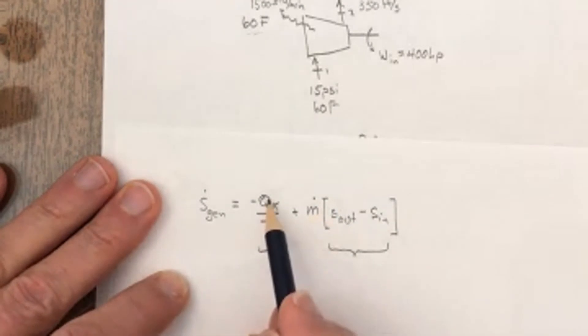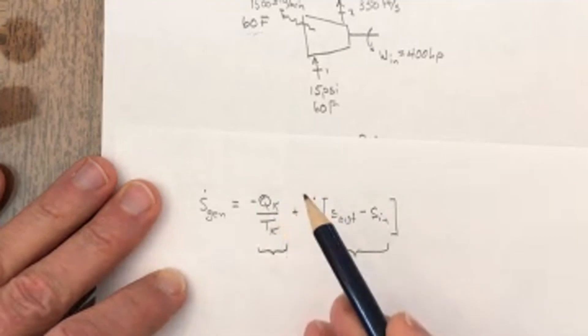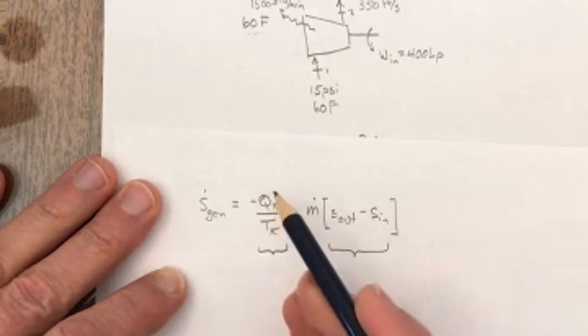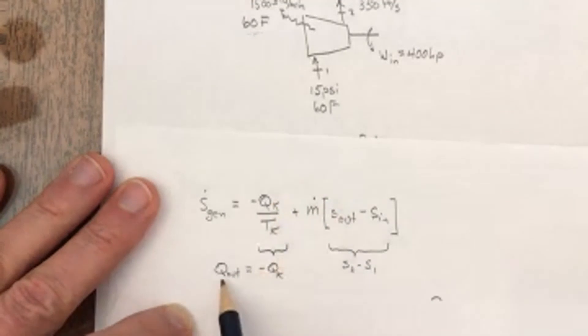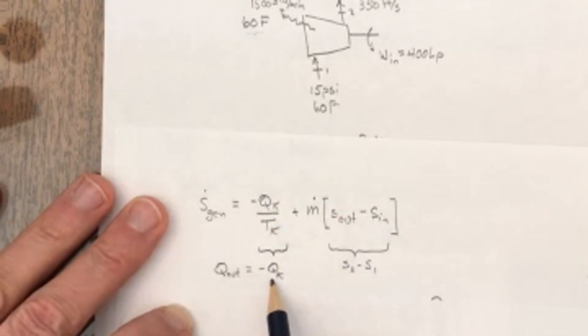So this Q of K is not written as an out or an in, so I have to be cognizant of the sign convention when I insert the heat transfer here. Keep in mind that Q out is like minus heat transfer.